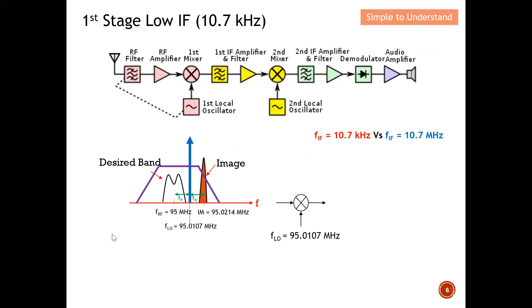Looking at the bandpass filter response: at the output of the mixer with a low IF, the desired band is received but part of the image leaks through as well — you can see it here. So under this first scenario with a low IF of 10.7 kHz, the image is not fully rejected.